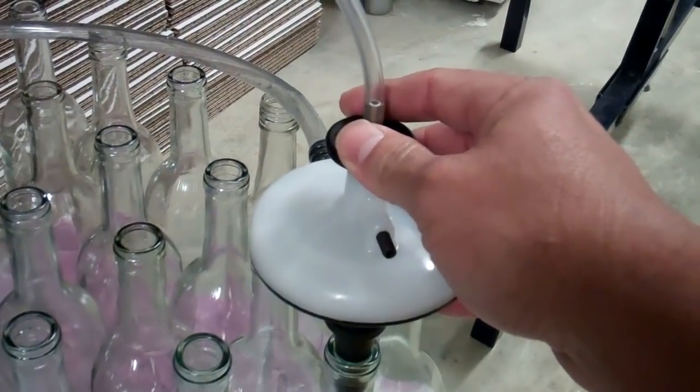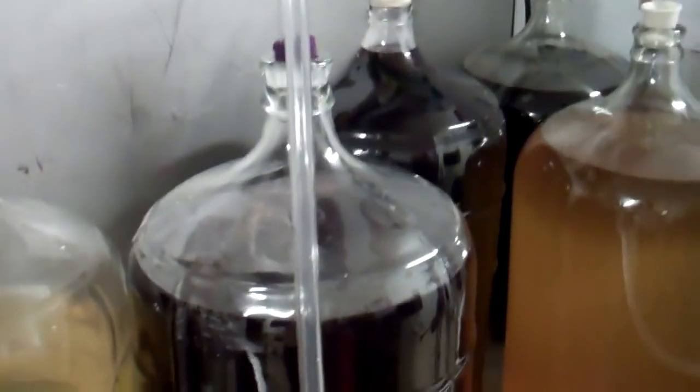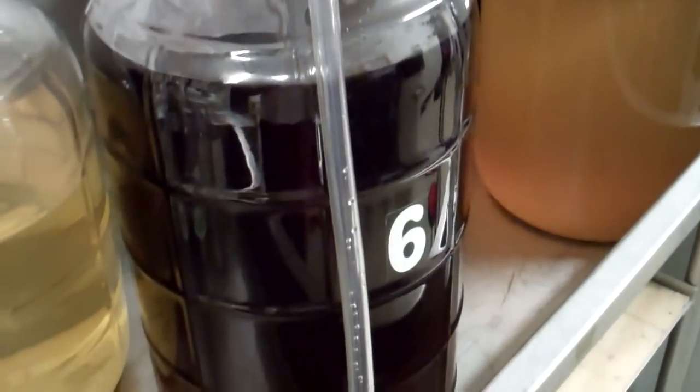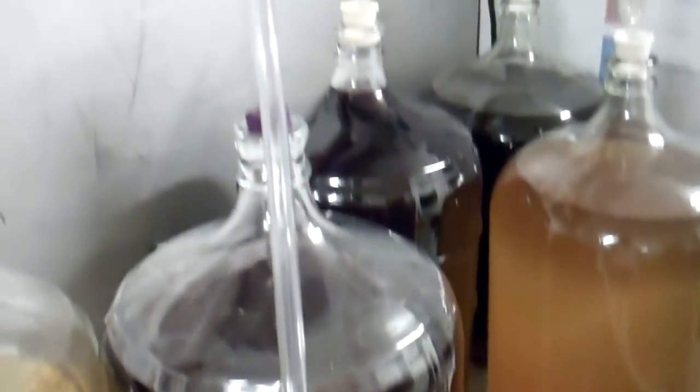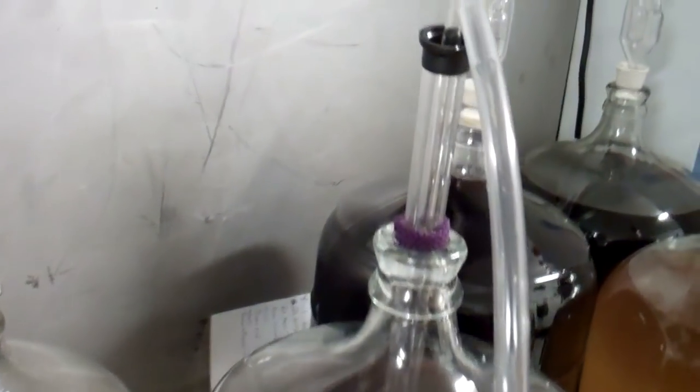So to prime this we're going to push it down and then what we're bottling today is some homemade strawberry wine that I made from strawberries that I grew in my backyard.